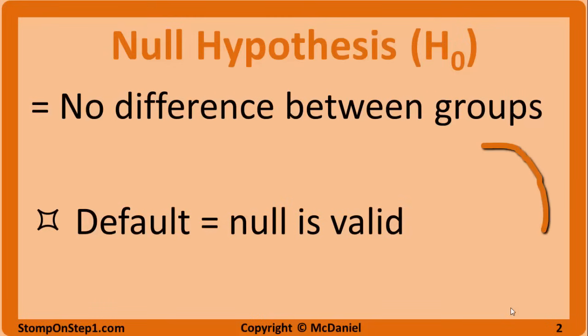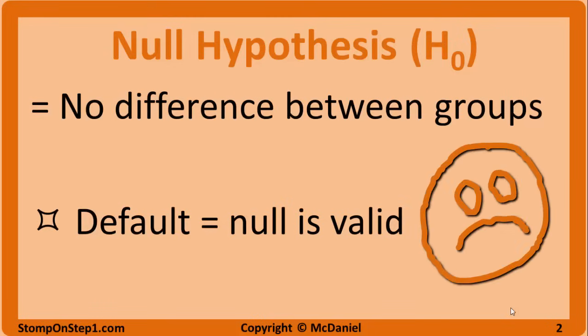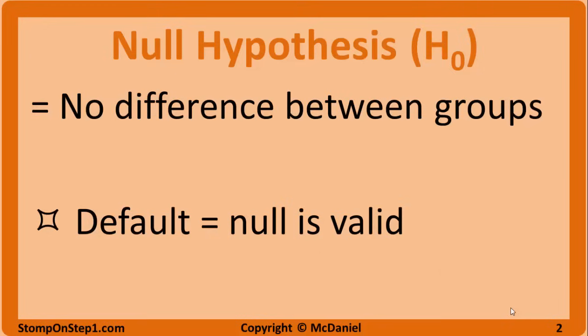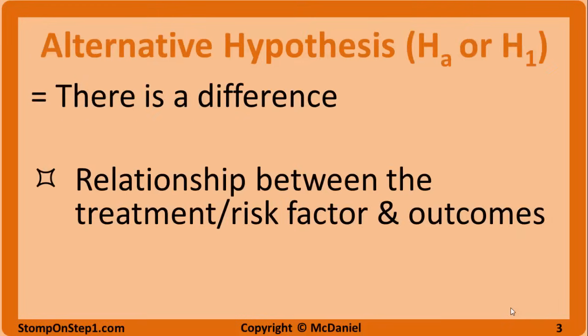By default, you assume the null hypothesis is correct until you have enough evidence to support rejecting it. If you are a researcher, it's usually kind of a bummer when the null hypothesis is valid because it means you didn't find a treatment that works, or that the risk factor you're studying isn't as important as you were hoping.